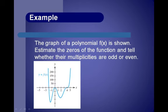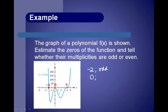The graph of a polynomial function is shown. Estimate the zeros and tell whether their multiplicities are odd or even. We have a zero at negative 2, a zero at 0, and a zero at 4. For negative 2, the graph crosses through — that is an odd multiplicity. For 0, the graph goes up, touches zero, and bounces back down — that is an even multiplicity. For 4, the graph touches it and crosses on through — that is an odd multiplicity.